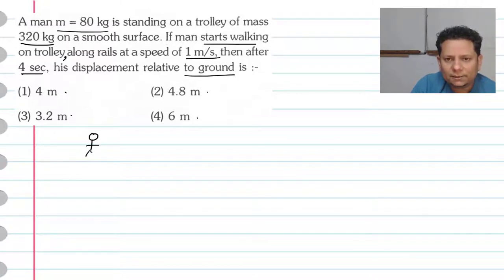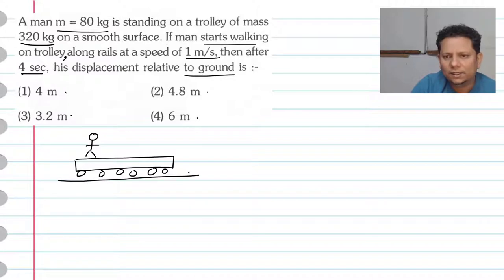Now the scenario is that this is a person on a trolley on a frictionless surface. The trolley is 320 kg and the man's mass is 80 kg.